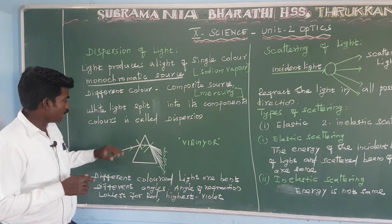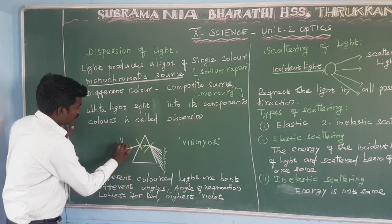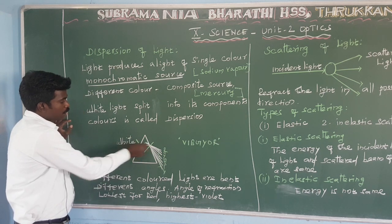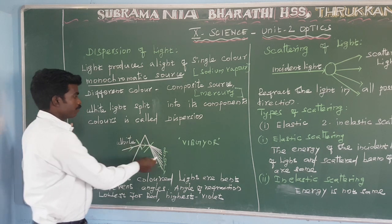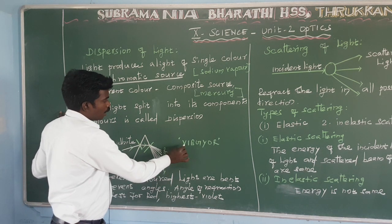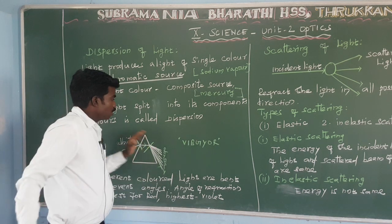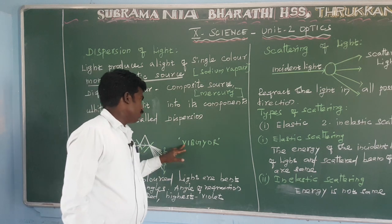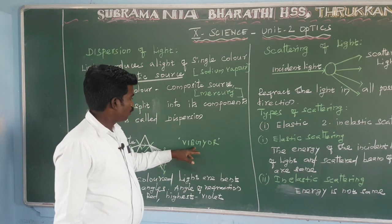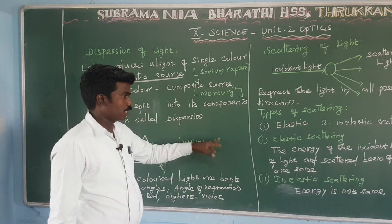When white light splits, what colors does it produce? The colors in white light are: Violet, Indigo, Blue, Green, Yellow, Orange, and Red — that is VIBGYOR.